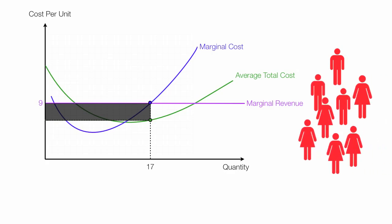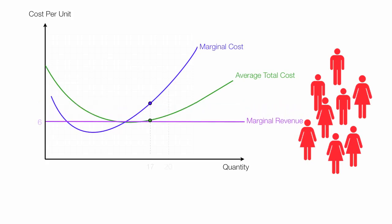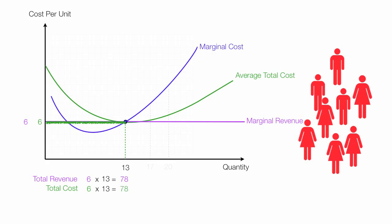More people enter the market because everyone is making money, and prices go down further — in this case to 6. Marginal cost equals marginal revenue again. At this point, cost is also 6 and quantity is 13. Cost and price are the same. Total revenue is 6 times 13, which is 78. Total cost is also 6 times 13, which is 78. Total revenue minus total cost equals total profit — in this case, 0. I should say total economic profit is 0.